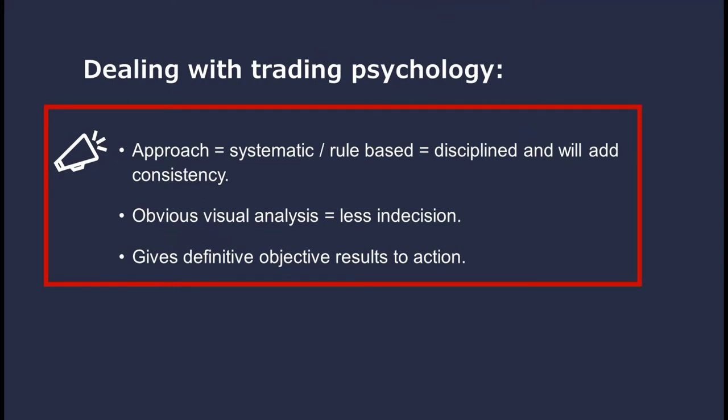To summarize before closing this section: line break, Renko, and Kagi — as does Heiken Ashi — all make you a more systematic, rule-based trader and therefore more disciplined, adding consistency. Because of the way it presents data with obvious visual analysis, there's less indecision in your trading. You'll be more positive around your actions, and it gives you more definitive, objective results to act upon. That can also help you create strategy ideas and stop loss and risk management rules, as we shall see later.